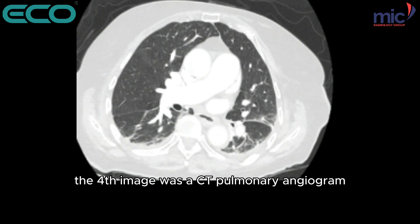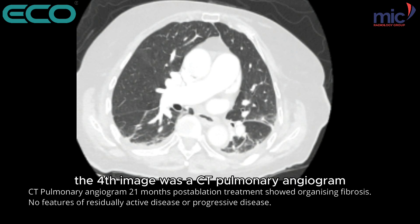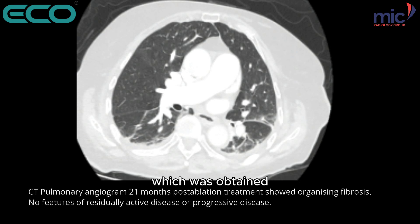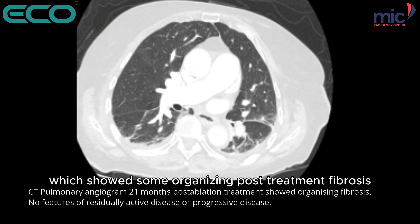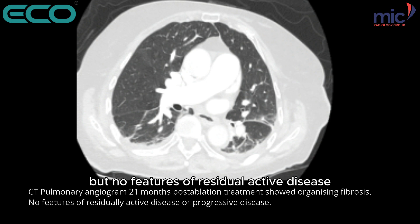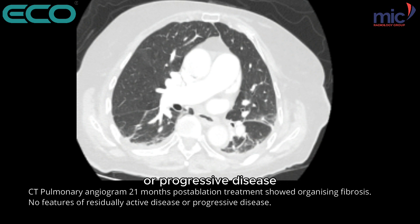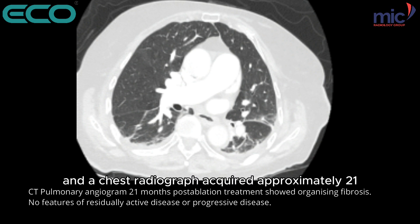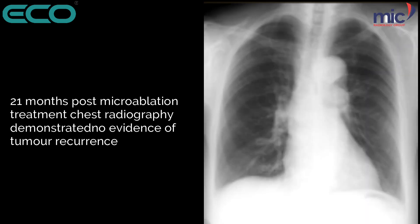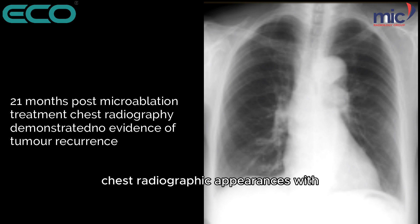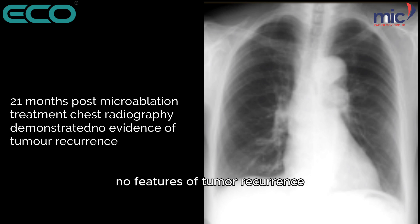The fourth image was a CT pulmonary angiogram obtained approximately 21 months after tumor ablation, which showed some organizing post-treatment fibrosis but no features of residual active disease or progressive disease. A chest radiograph acquired approximately 21 months post-treatment demonstrated essentially normal chest radiographic appearances with no features of tumor recurrence or new lung metastases.